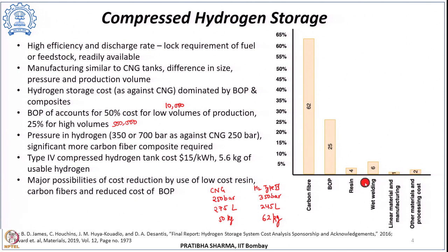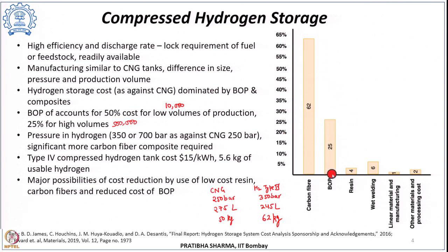The major cost reduction opportunities exist in reducing resin cost, fiber cost, or balance of plant cost. There is a major possibility of cost reduction if we could look at alternatives to get lower-cost carbon fiber and reduce the balance of plant cost.